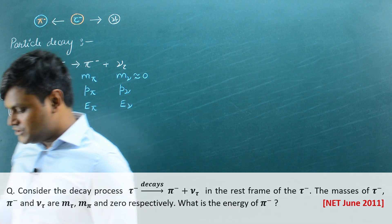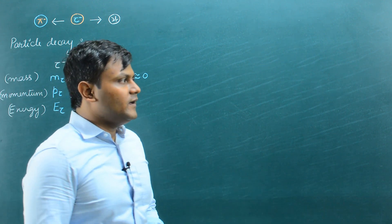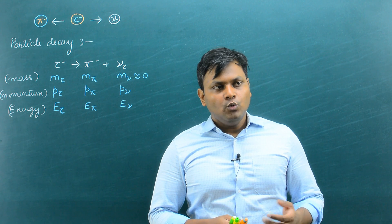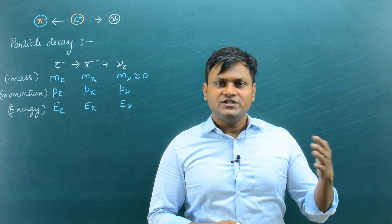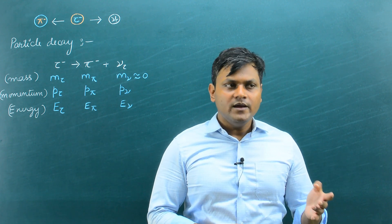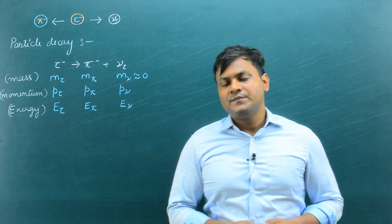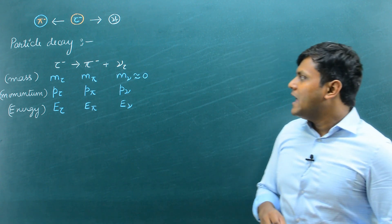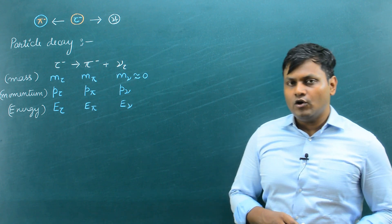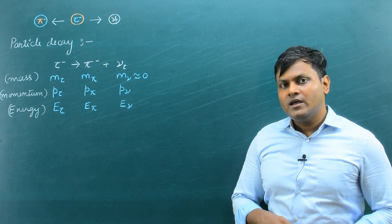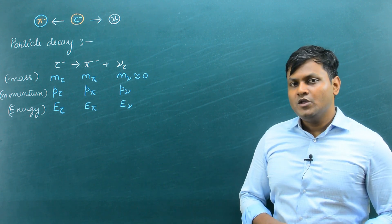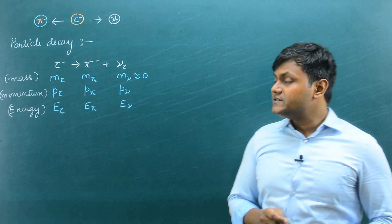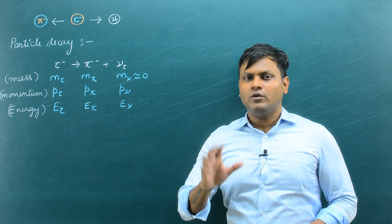This is a very standard question in relativity where you have some kind of particle interaction — decays of subatomic particles — where you need to obtain the velocity, momentum, or energy of a particle based on the parameters of the other particles. Many students struggle with questions like these, but they are not very difficult. If we correctly apply the conservation laws of momentum and energy along with the expressions for relativistic energy and relativistic momentum, we can figure out how to solve problems like these.